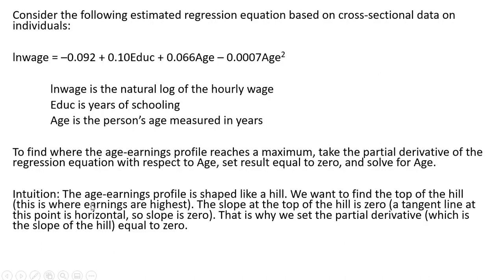The intuition behind this is as follows. The age-earnings profile is shaped like a hill. We want to find the top of the hill. This is where earnings are at their highest. The slope at the top of the hill is zero. Recall a tangent line at this point is going to be horizontal, and the slope of a horizontal line is zero. So that is why we set the partial derivative, and the partial derivative, or the derivative in general, is just a slope function. In this case, giving us the slope of this hill. And so we're going to set that derivative equal to zero.